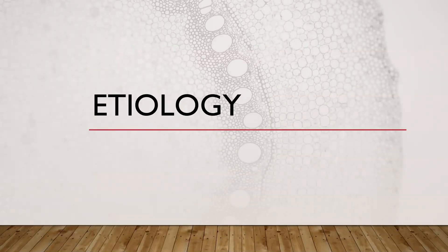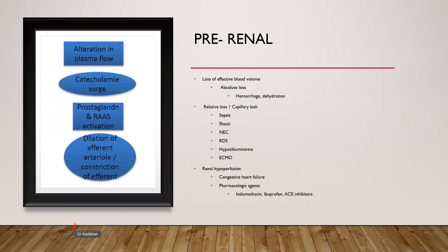Coming on to etiology: pre-renal causes include excessive loss of volume such as hemorrhage or dehydration, excessive capillary leak as in sepsis, shock, NEC, RDS, hypoalbuminemia, and decreased renal perfusion such as congestive heart failure. Certain drugs which cause vasoconstriction can also cause pre-renal AKI.